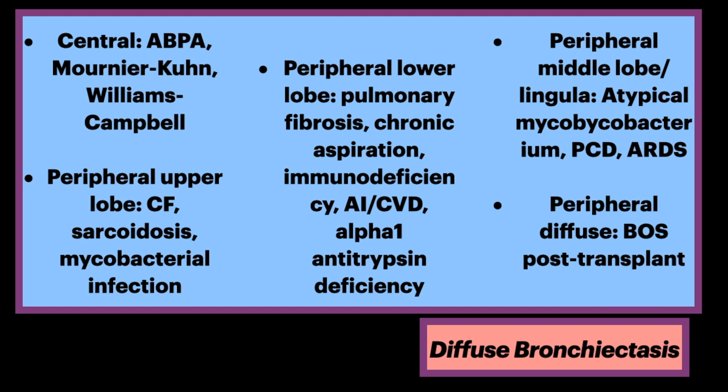In terms of diffuse bronchiectasis, there are multiple lobes involved. For central diffuse bronchiectasis, consider ABPA (allergic bronchopulmonary aspergillosis), Mounier-Kuhn syndrome, and Williams-Campbell syndrome.